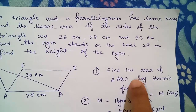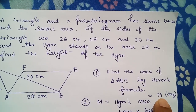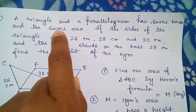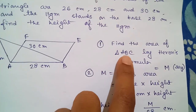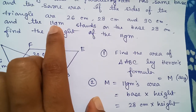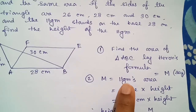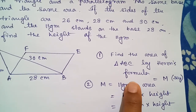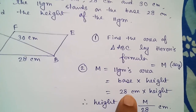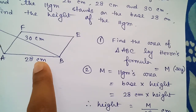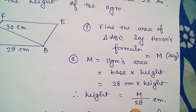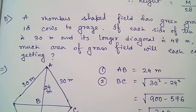Let's call the result of Heron's formula 'm'. Since the triangle and parallelogram have the same area, this 'm' is also the parallelogram's area. The parallelogram's area formula is base × height. So m = 28 cm × height, which means height of the parallelogram = m ÷ 28 centimeters, and that is the answer.